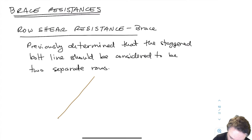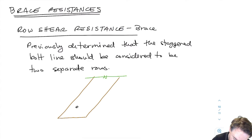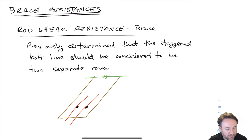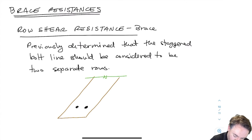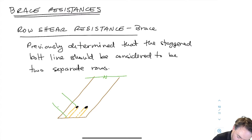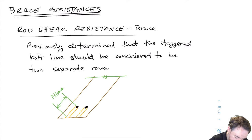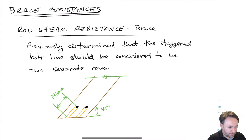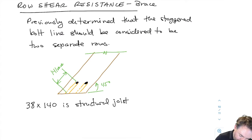Let's recall the geometry for the brace. Based on the relative spacing of rows and columns, we decided to treat the bolt layout as two rows of bolts. That means we have two different row shear lines. The distance from the center of the bolt to where the row shear line meets the edge is 141 millimeters — this was at a 45-degree angle — so our row shear length is 141 mm. We don't need to take any minimum here because there is only one plug to remove.